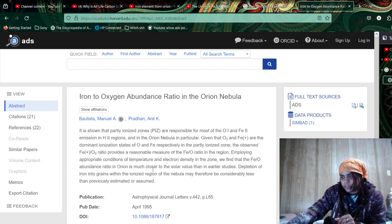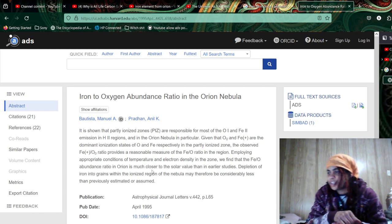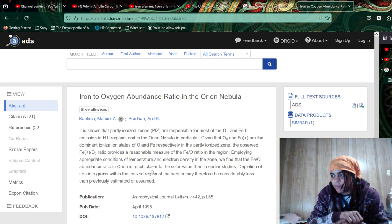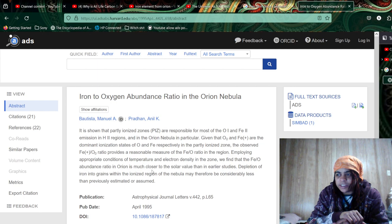This one is in 1995, which is interesting. It is shown that a partially ionized zone, PIS, are responsible for most of the oxygen 1 and iron 2 emissions in the H2 region and in the Orion Nebula in particular, given that O and Fe plus are the dominant ionization states of oxygen and irons respectively in the partially ionized zone. I thought we were calling it PIS. Okay. The observed iron slash oxygen ratio provides a reasonable measure of the iron slash oxygen ratio in the region. Employing appropriate conditions of temperatures and electron density in the zone, we find that the iron-oxygen abundance ratio in Orion is much closer to the solar value than in earlier studies.